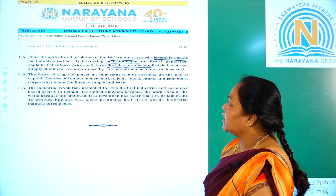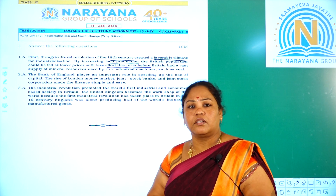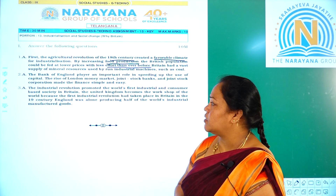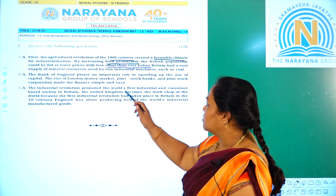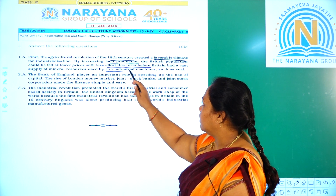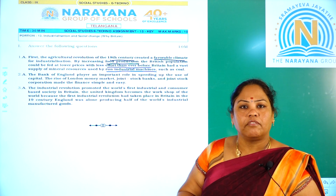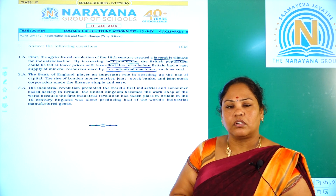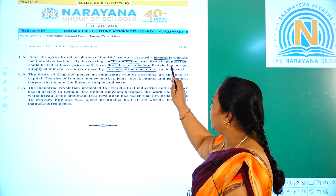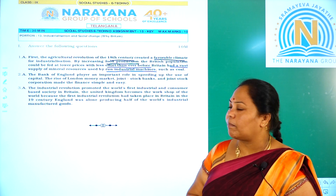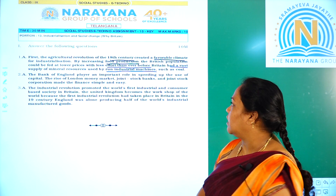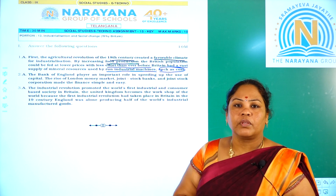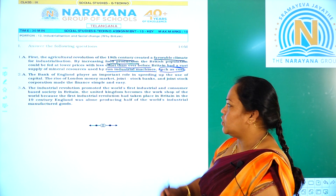Britain had a vast supply of mineral resources. A huge supply of mineral resources was used to run the industrial machines, such as coal. The supply of coal was plentiful and was used to run the industrial machines.